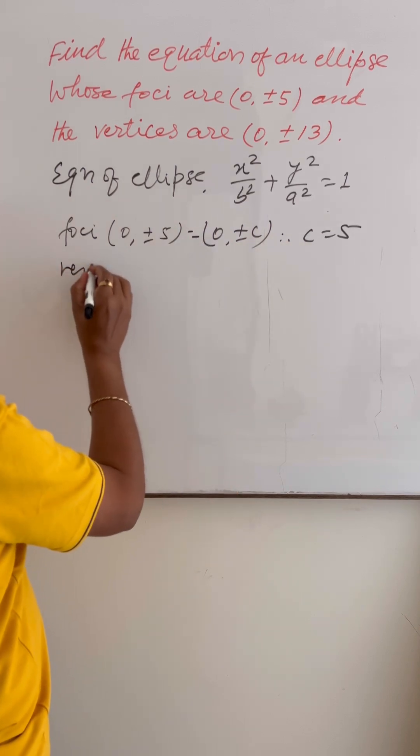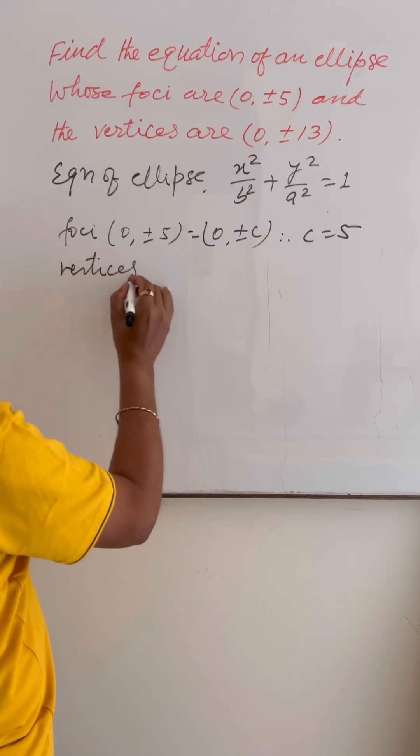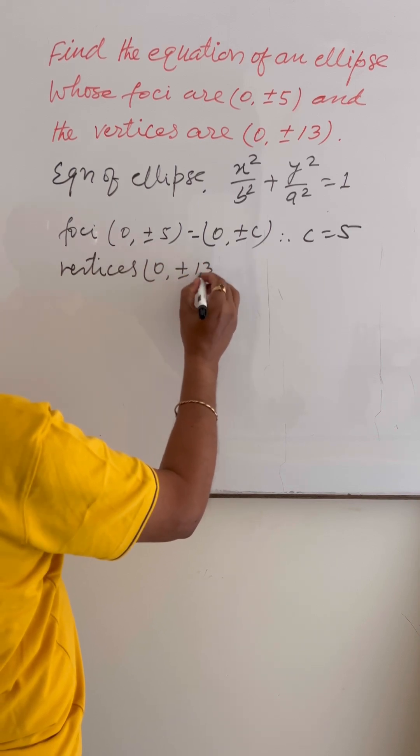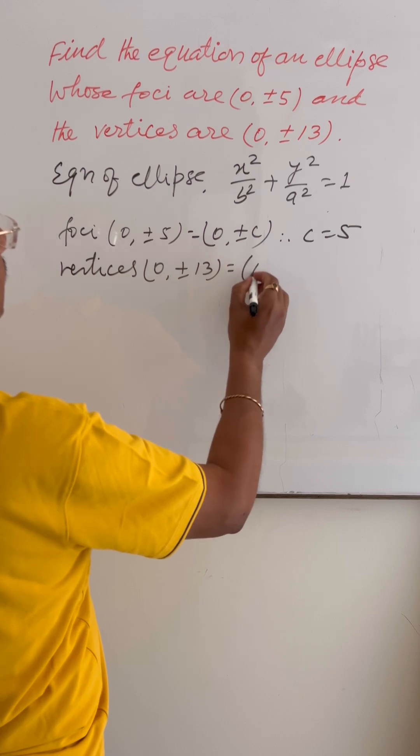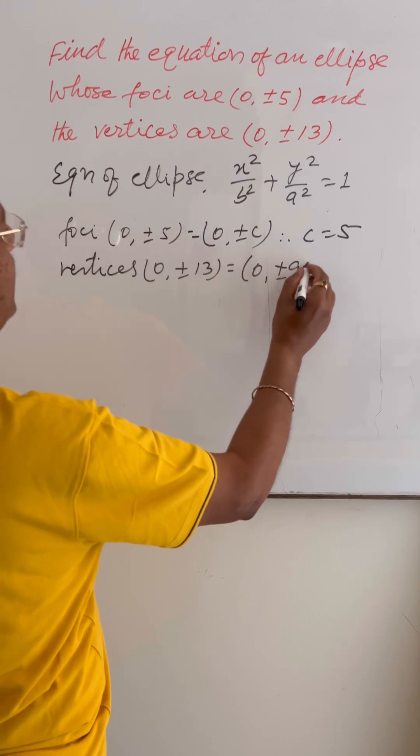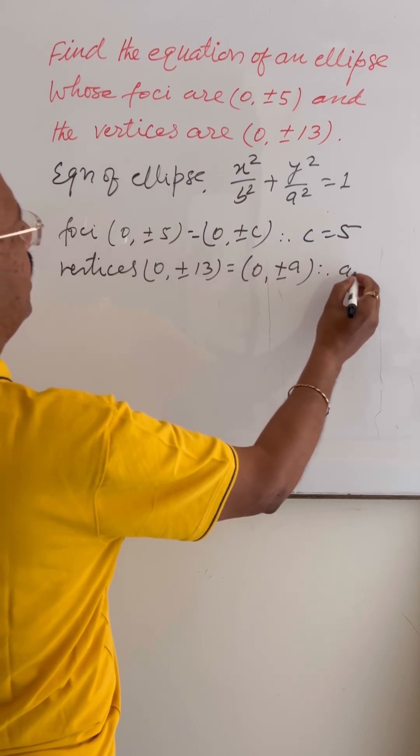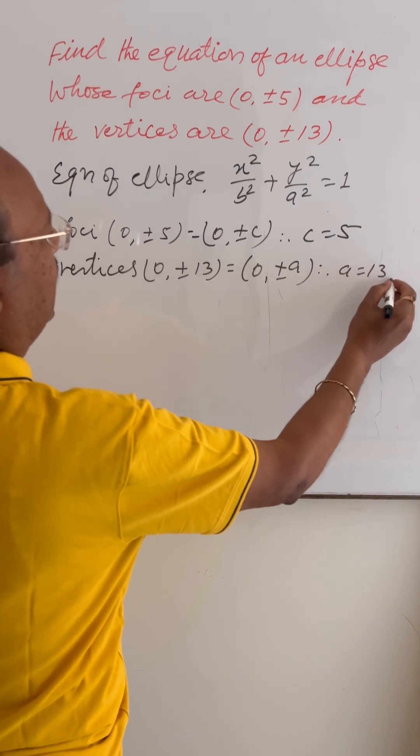And vertices are given as (0, ±13), and we know that coordinates of vertices are (0, ±a). Therefore, we are getting a = 13.